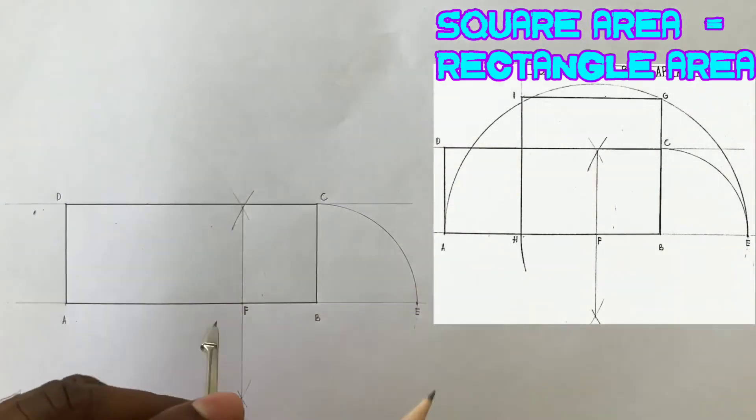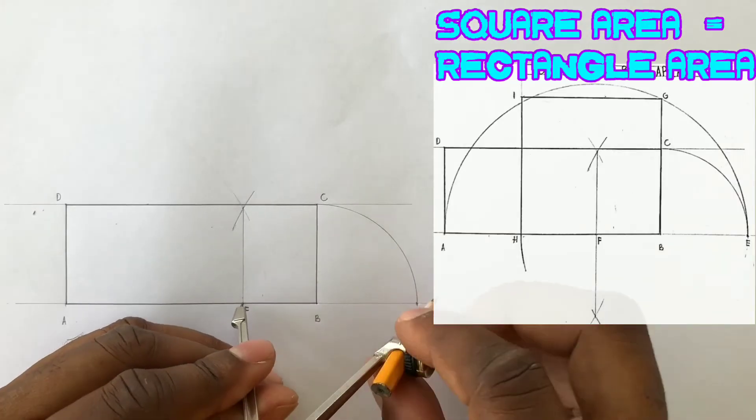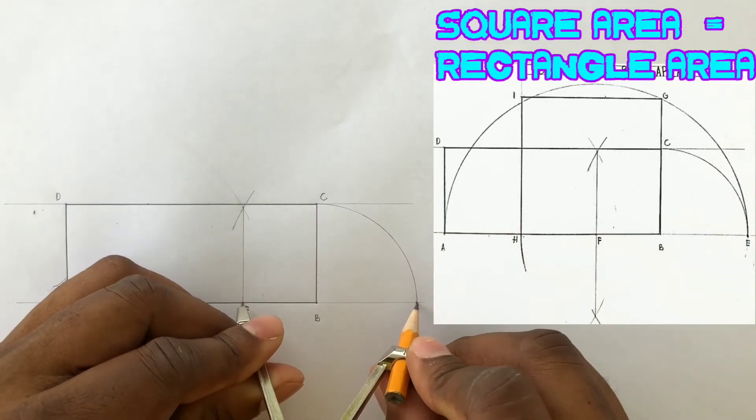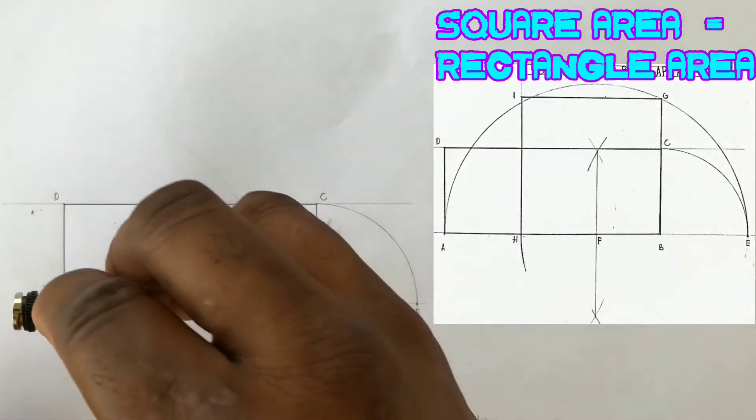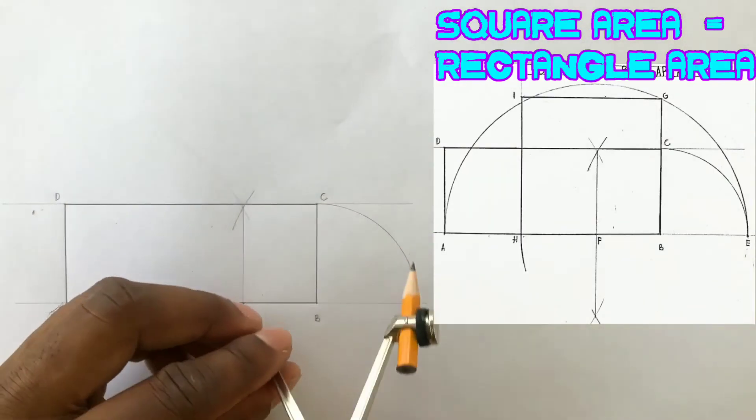Now open your compass from F to E, or from F to A, and draw a semicircle.